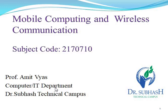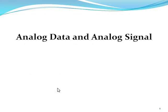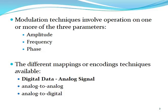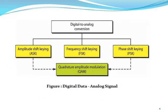In the previous lecture, we discussed what is modulation, what is the amplitude, frequency, and phase. We also discussed analog data and analog signal, and different modulation techniques involving one or more parameters — modulation is effected in the amplitude, frequency, and phase. We also discussed different mapping and coding techniques, digital data and analog signal, and digital to analog conversion — amplitude shift key, frequency shift key, and phase shift key.